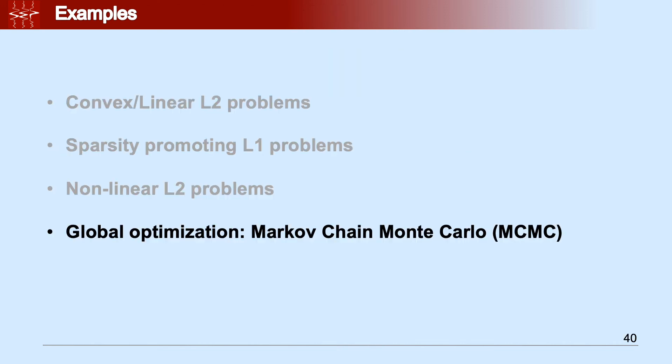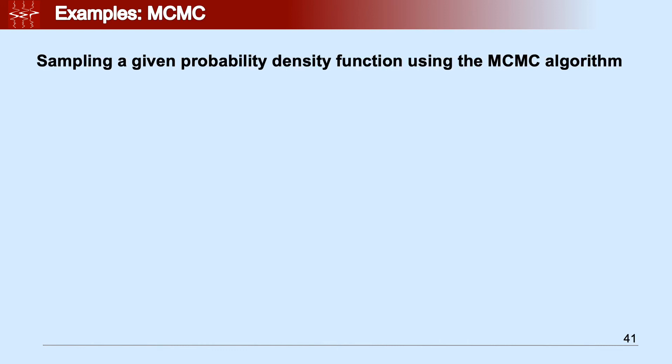We showed you the application of the library on three different cases where we applied common gradient-based optimization methods. And here we would like to show you the fact that the library can also be used to perform global optimization. In this case, you're going to see preliminary results of the Markov Chain Monte Carlo method, or MCMC. Here we would like to extract samples out of a given probability density function, or PDF.